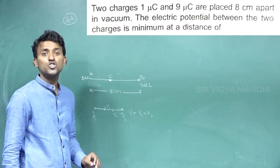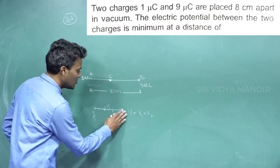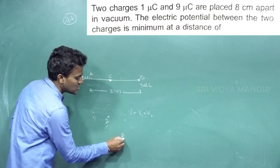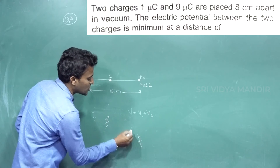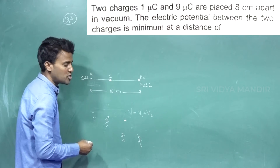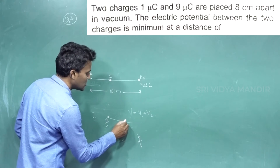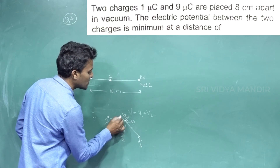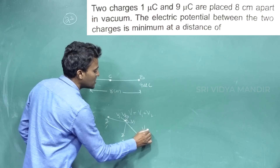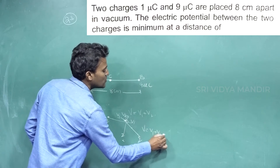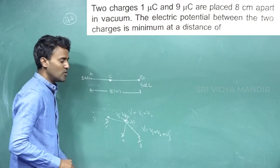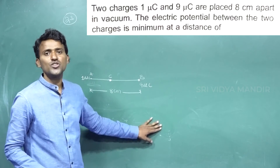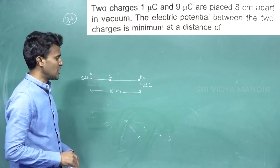The potential at a point P due to multiple charges: for example, if there are charges Q1, Q2, and Q3, then the potentials due to each are V1, V2, and V3 respectively. The total potential V is equal to V1 plus V2 plus V3.